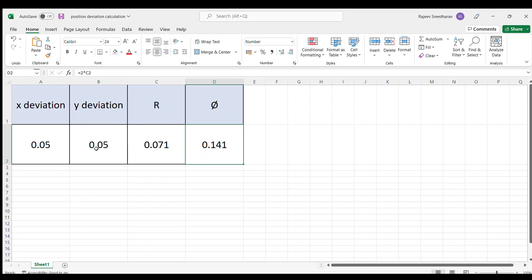Say, assume that my x-axis is 0.05 and y-axis is 0, then it is 0.1.